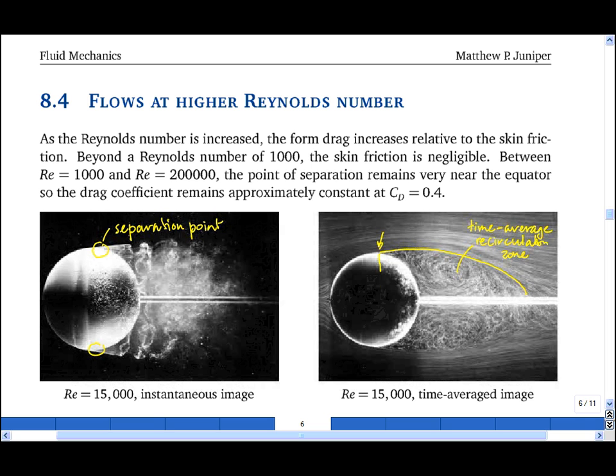And because the position of the separation point doesn't change much with Reynolds number, and because the pressure difference between one side and the other, Δp, scales with ½ρv², where v is the speed of the incoming flow, the drag coefficient in this range of Reynolds number stays approximately constant at around 0.4. And if we go back a page, you can see this region around here.